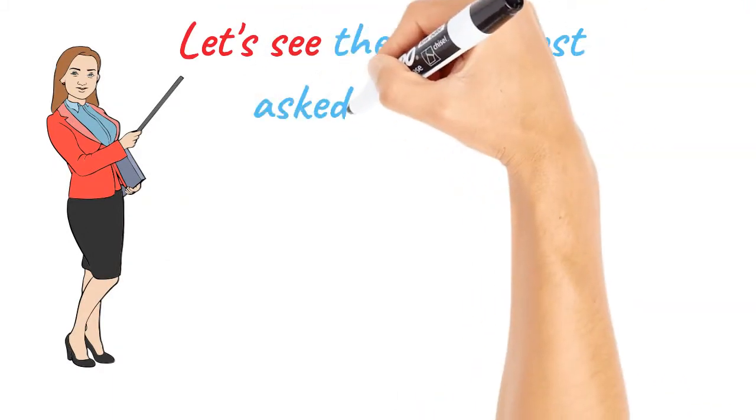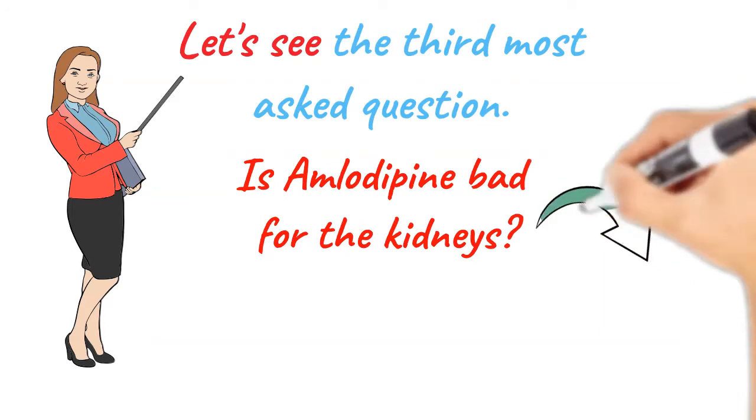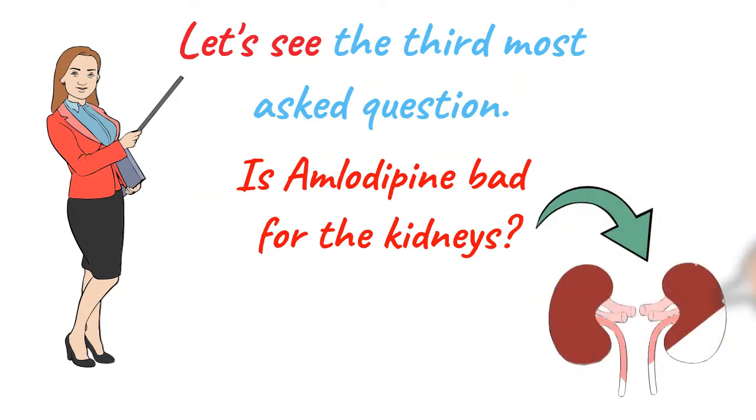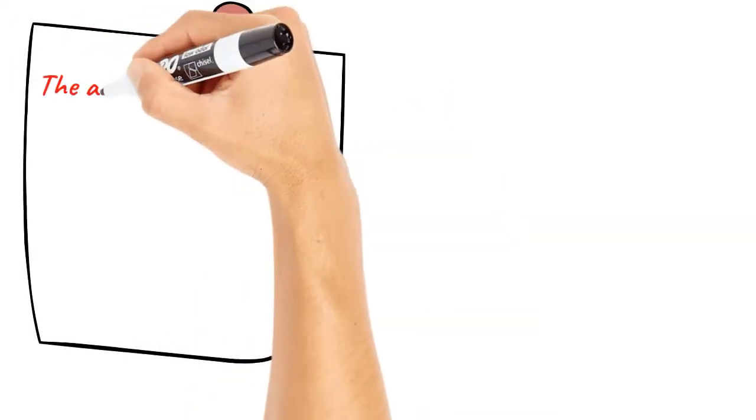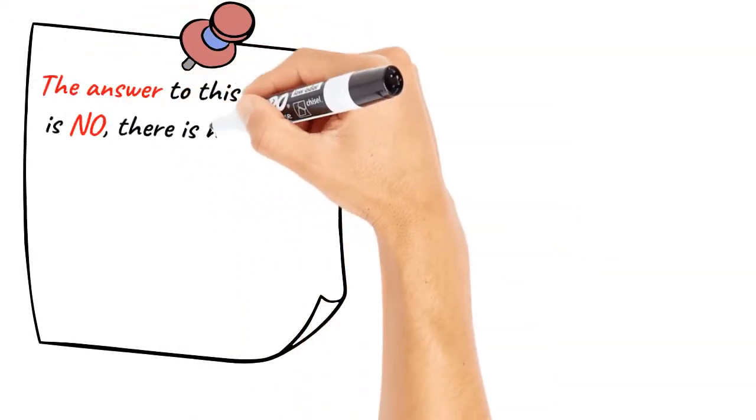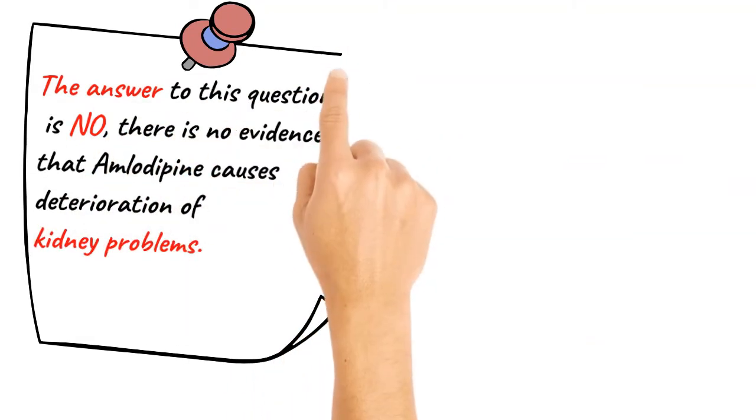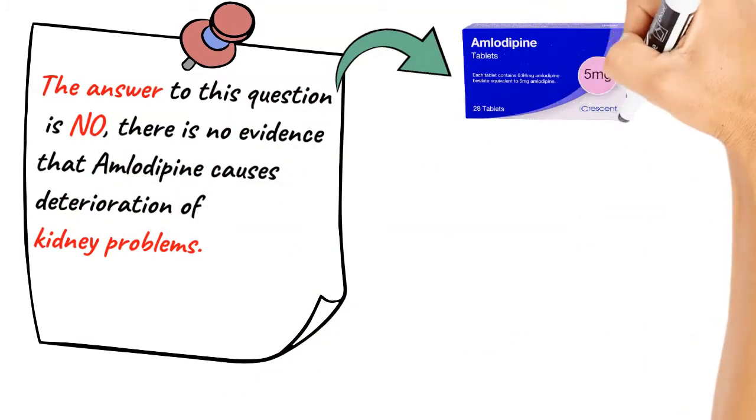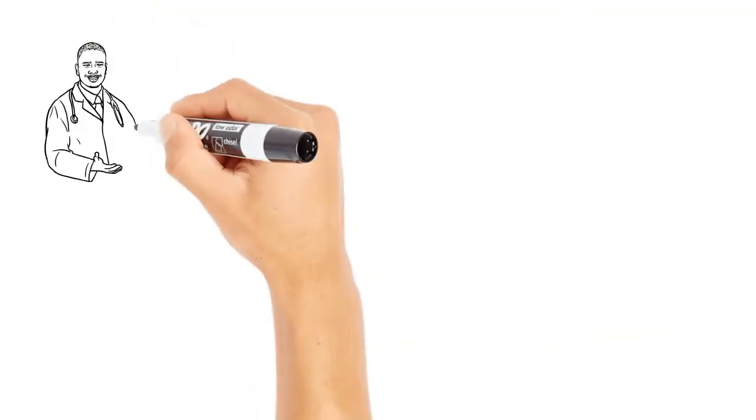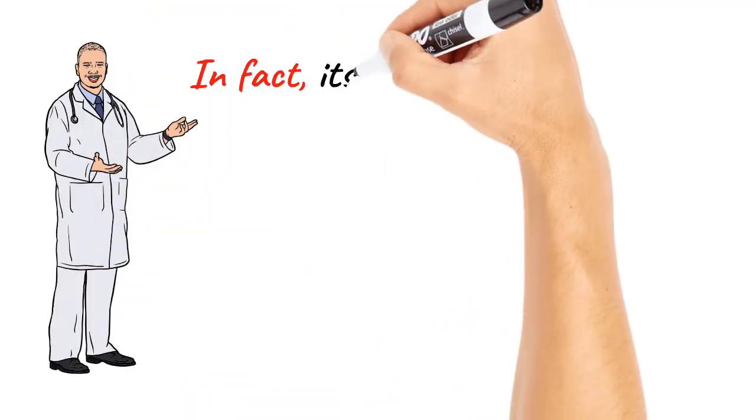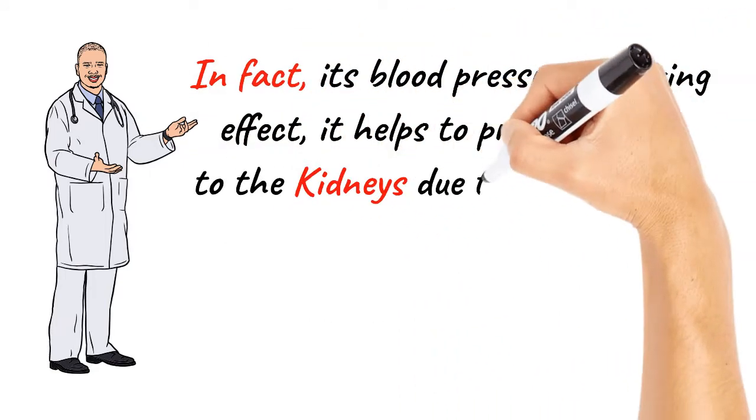Let's see the third most asked question. Is amlodipine bad for the kidneys? The answer to this question is no. There is no evidence that amlodipine causes deterioration of kidney problems. Amlodipine can be used in normal doses in patients with kidney problems. In fact, its blood pressure lowering effect helps to prevent injury to the kidneys due to hypertension.